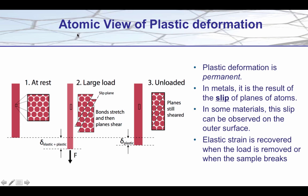Let's have another look at the atomic view. Here is a metal specimen at rest — the atoms joined together by metallic bonds. This time we will apply a load and take it past the yield strength of the material. We get an amount of deformation or elongation which has an elastic component and also a plastic component. The bonds stretch just as we saw before, but something else happens: whole planes of atoms start slipping past one another, giving additional elongation.